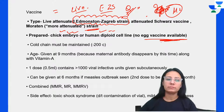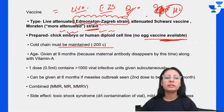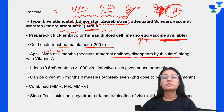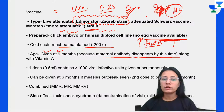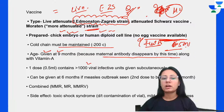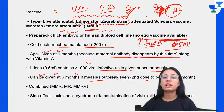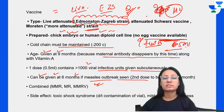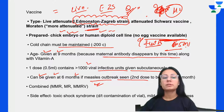One dose of 0.5 ml subcutaneously contains more than 1,000 infective units. It can be given at 6 months if a measles outbreak is seen. Combined vaccines available include MMR and MMRV, given at 15 months along with vitamin A, 0.5 ml subcutaneously, one dose. Side effects include toxic shock syndrome (if vial is contaminated) and mild measles-like illness.